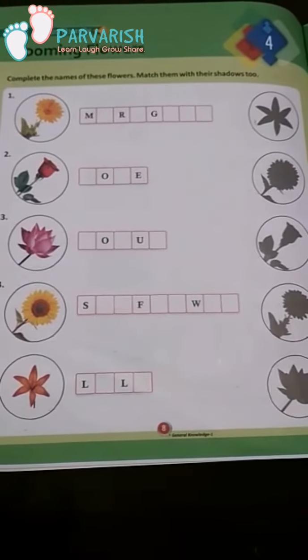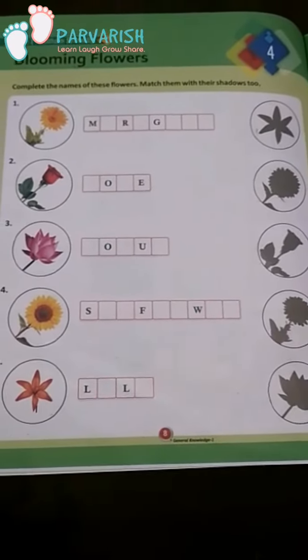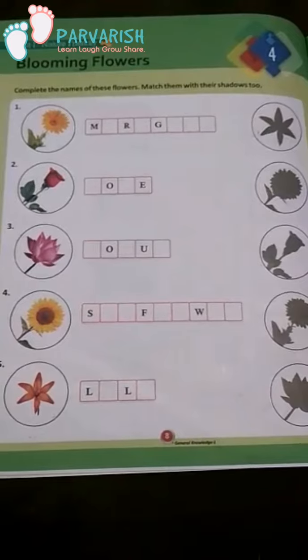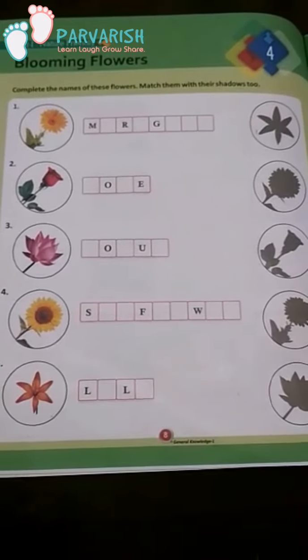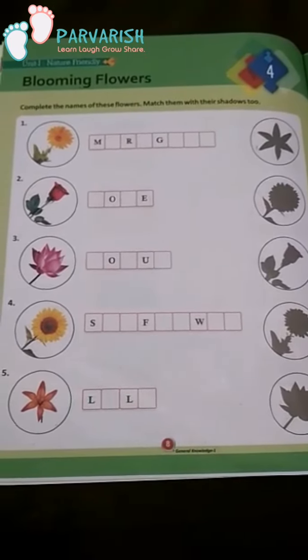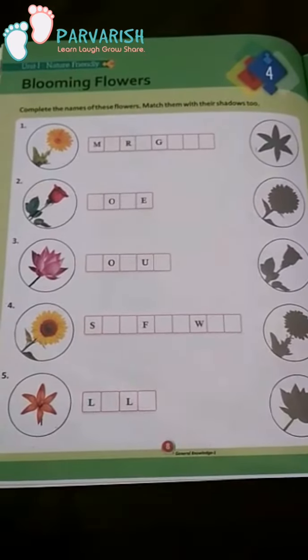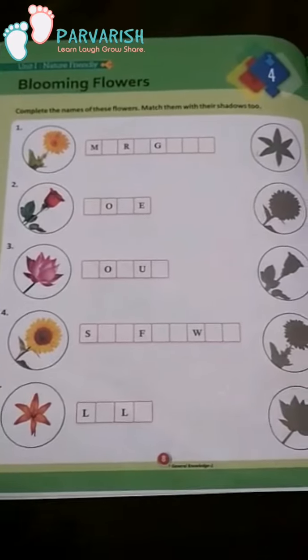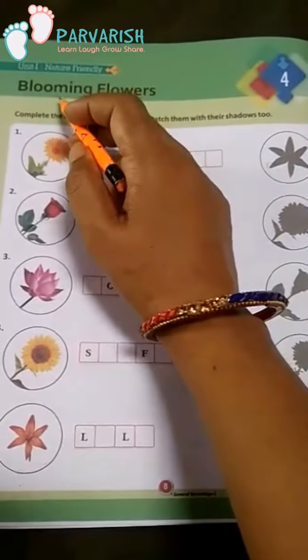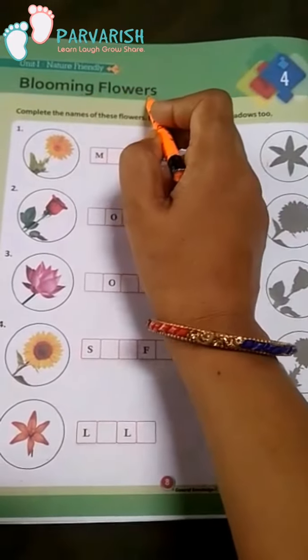Hello students, I am your teacher Anitha Tamar from Perveris School. Today I will explain class 1st lesson 4 GK. The lesson name is Blooming Flowers.